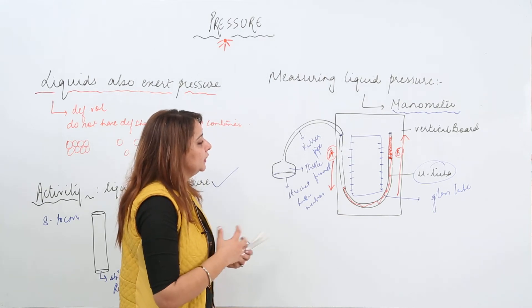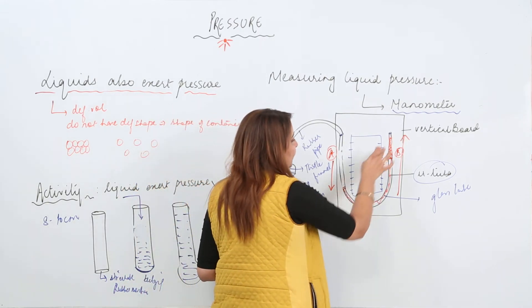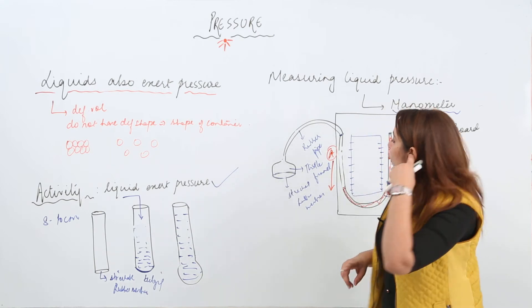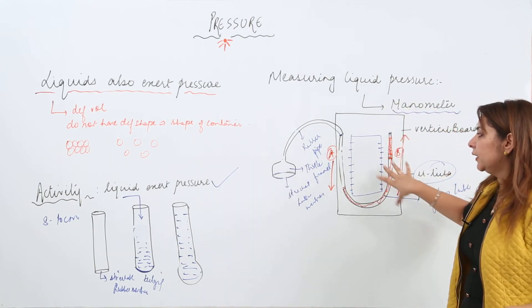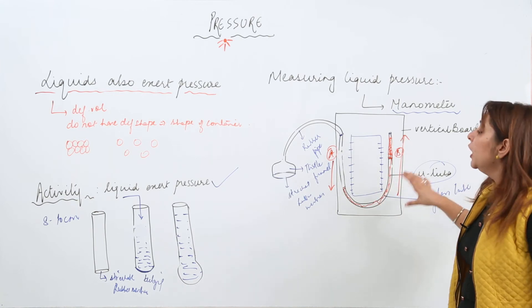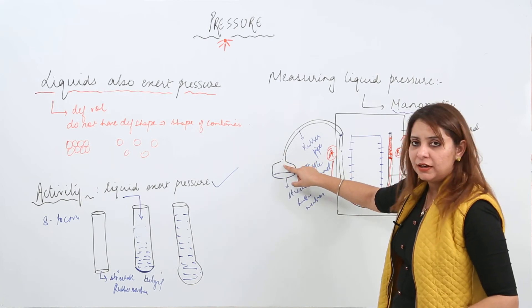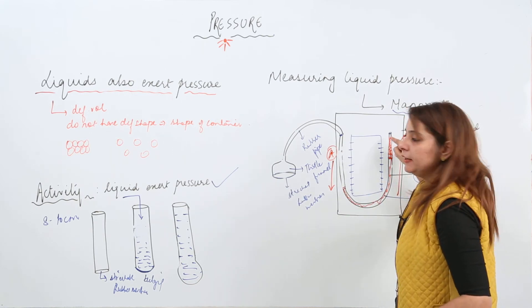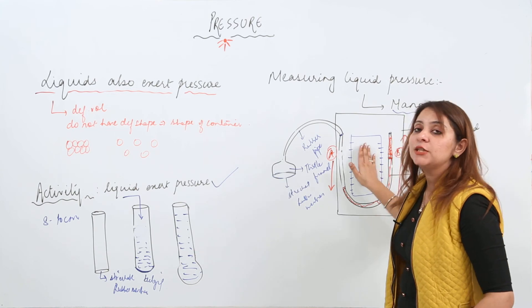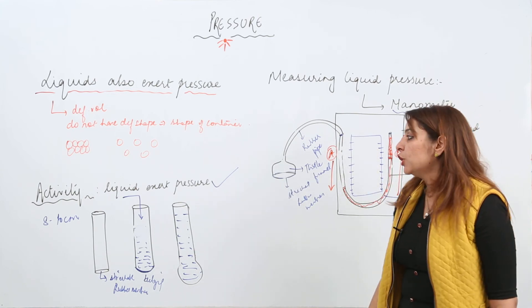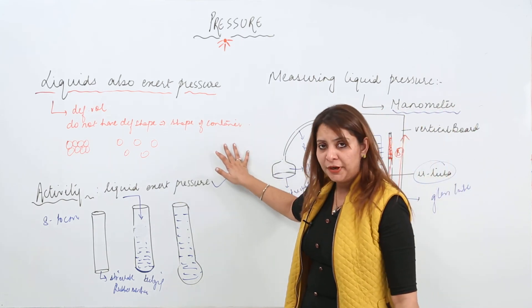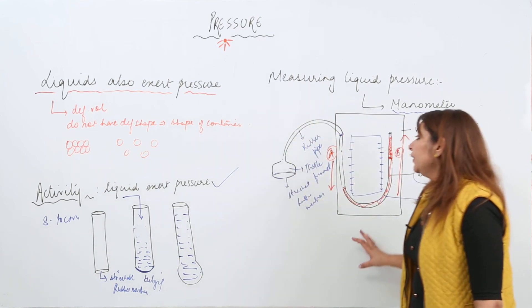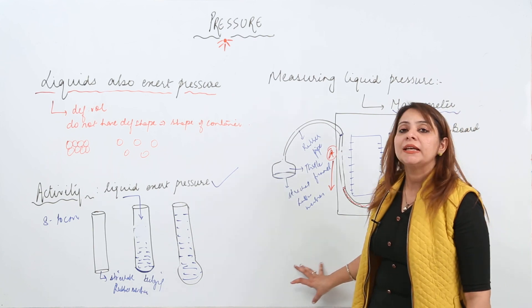The difference in the liquid level between the two arms is the measure of the pressure exerted on the rubber membrane. Initially the levels are equal on both arms. When you press the rubber membrane, the trapped air makes the liquid move down in arm A and rise in arm B, and the difference in the two levels is recorded by the scale — that reading represents the pressure exerted by the liquid.